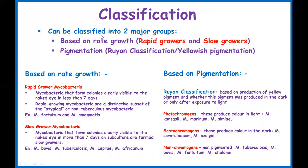We can classify these bacteria based on two systems: one based on how fast they grow — rapid growers versus slow growers — and another, an older classification called the Runyon classification, which looks at the pigmentation that Mycobacterium produces in different environments, whether in light or in darkness.